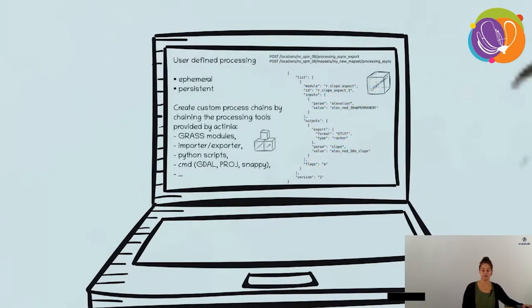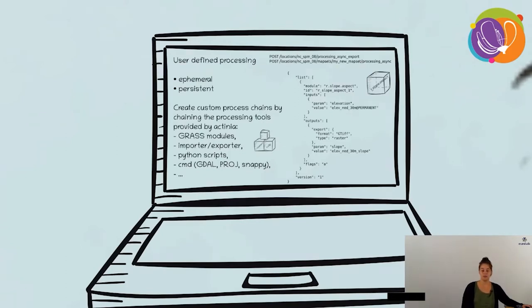There are two kinds of processing: ephemeral and persistent. With ephemeral processing you specify an output format such as GeoTIFF for raster data, and results can be downloaded after processing. With persistent processing, a mapset is specified and the result is not exported from GRASS GIS but stays in the GRASS database and can be used for further processing.